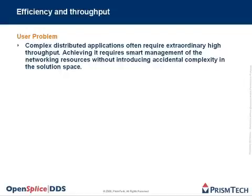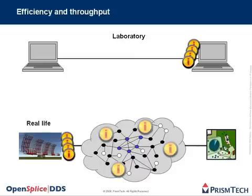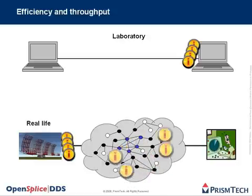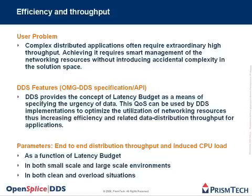Complex distributed applications often require extraordinary high throughput. This aspect is quite hard to evaluate as well. Usually, a simple point-to-point laboratory situation is not good enough. In real life, systems are much more complex, with data moving around, and it is interesting to measure the throughput in such situations. The OMG specification provides the concept of latency budget as a means of specifying the urgency of data. With this in mind, we can specify the parameters end-to-end distribution throughput and induced CPU load as a function of latency budget. The test suite should be able to measure that in both small-scale and large-scale environments, in both clean and overload situations.